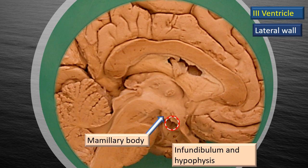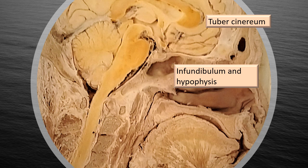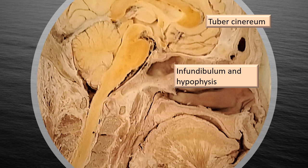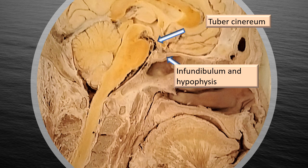The next slide shows a museum exhibit of a sagittal section of the head. You can see the infundibulum and the hypophysis. The lower arrow shows the hypophysis located in the hypophysial fossa. The upper arrow points to a small elevation in the floor of the third ventricle — that is the point where the infundibulum begins, and that elevation is called the tuber cinereum.